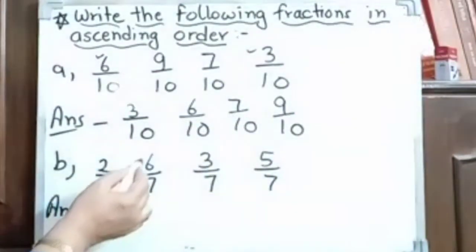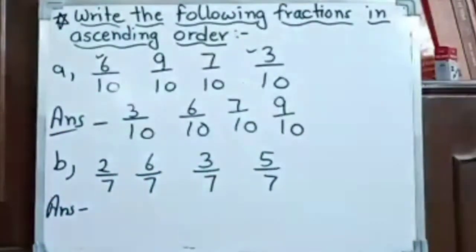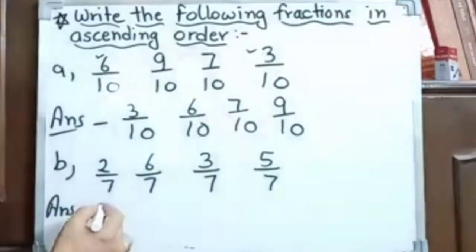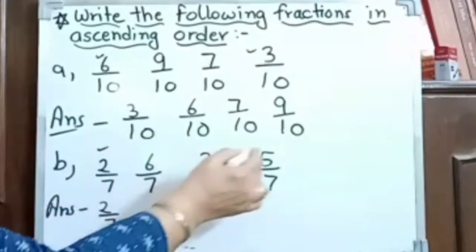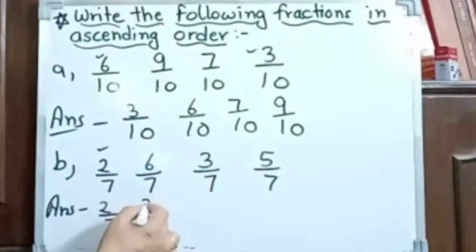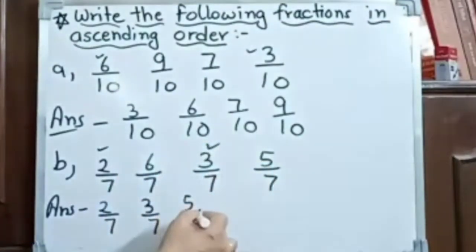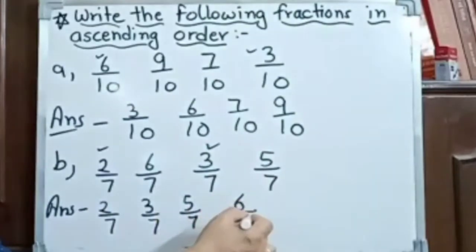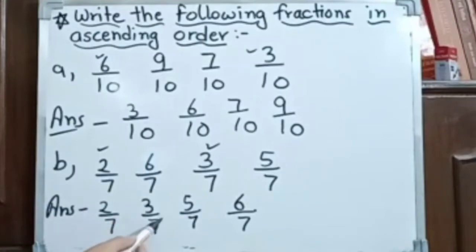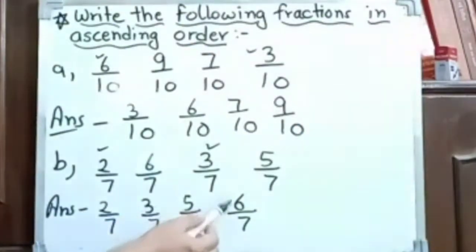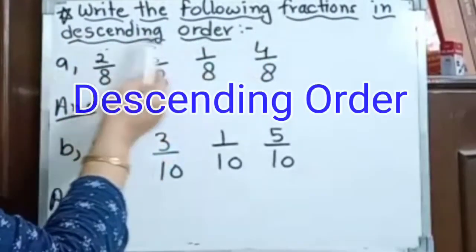Now here we have 2 by 7, 6 by 7, 3 by 7, and 5 by 7. Denominators are the same. So which one is smaller? 2 by 7. Then comparing the remaining three, 3 by 7 is smaller. Then comparing the last two, 5 by 7 is smaller. Then last is 6 by 7. So ascending order is: 2 by 7, 3 by 7, 5 by 7, 6 by 7.